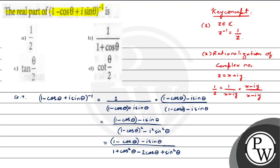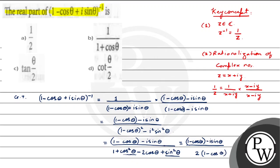Further simplification: the numerator is (1 minus cos theta minus i sine theta). In the denominator, cos squared theta plus sine squared theta equals 1, so 1 plus 1 minus 2 cos theta becomes 2 minus 2 cos theta. Taking 2 common, it becomes 2 times (1 minus cos theta).